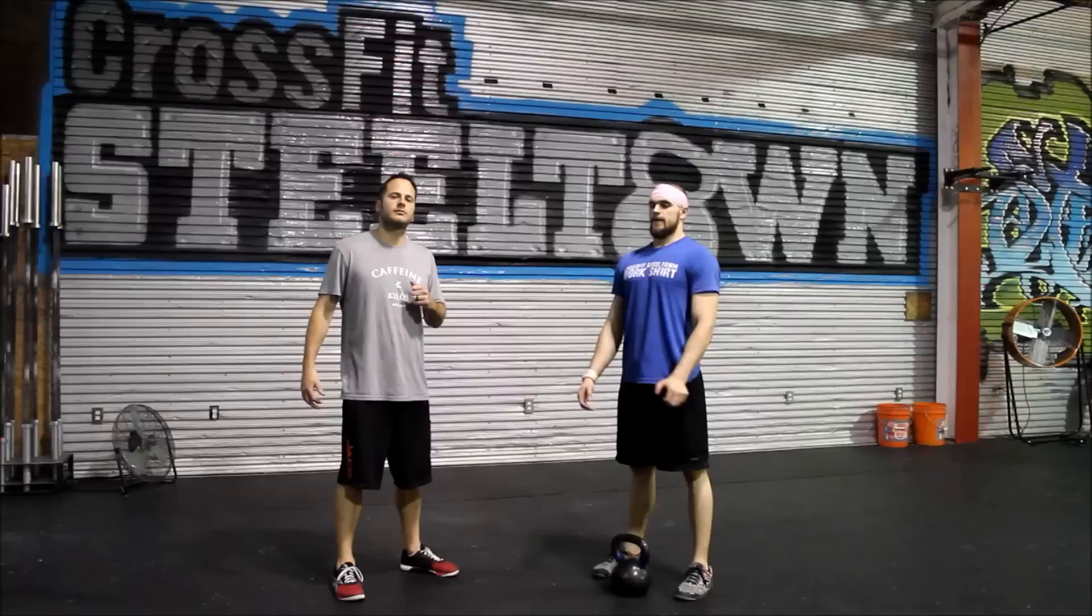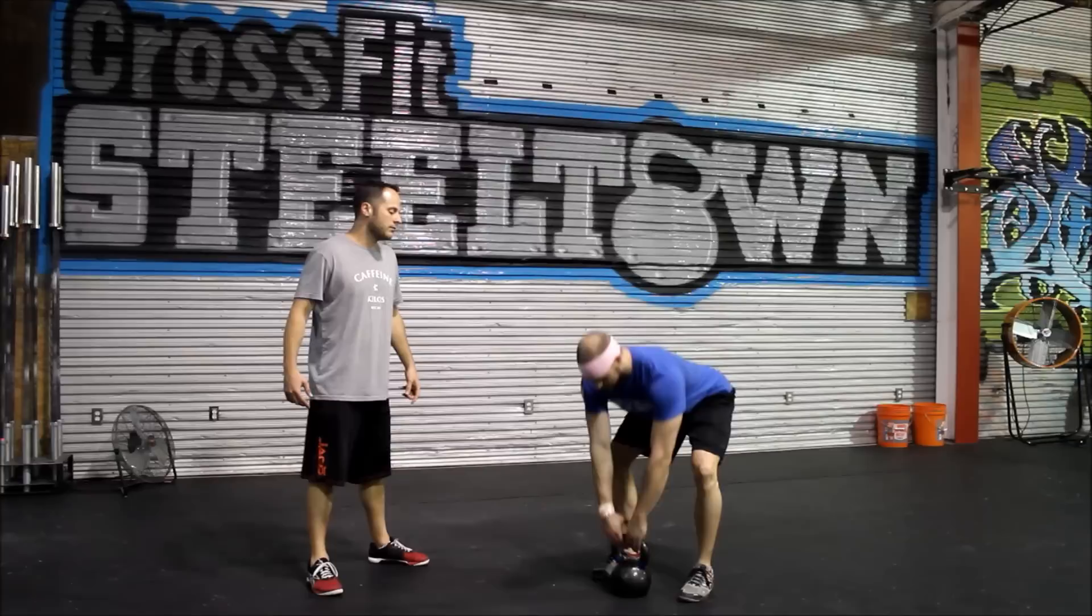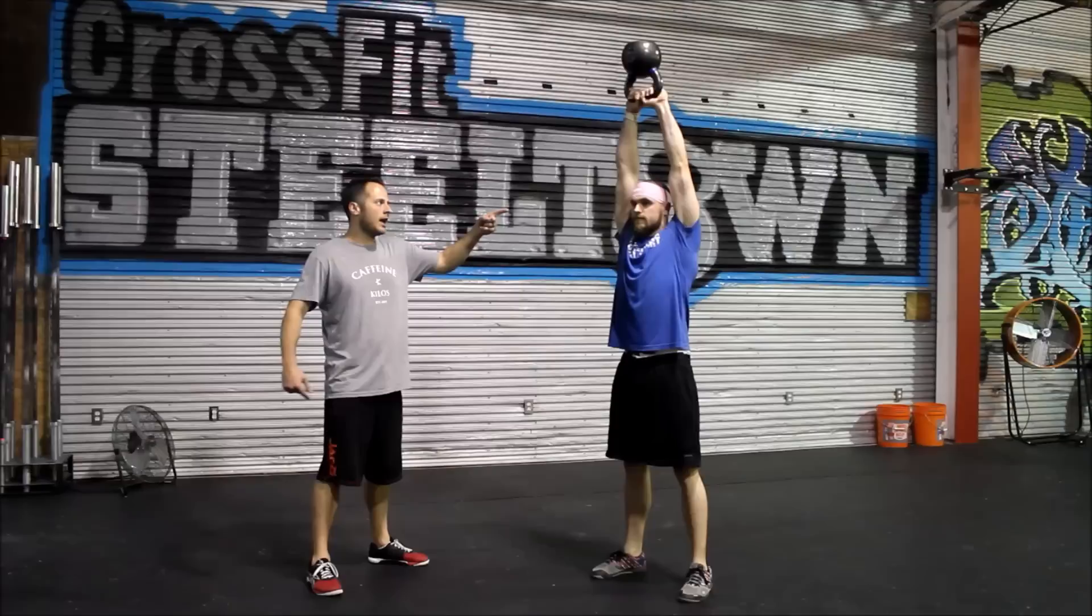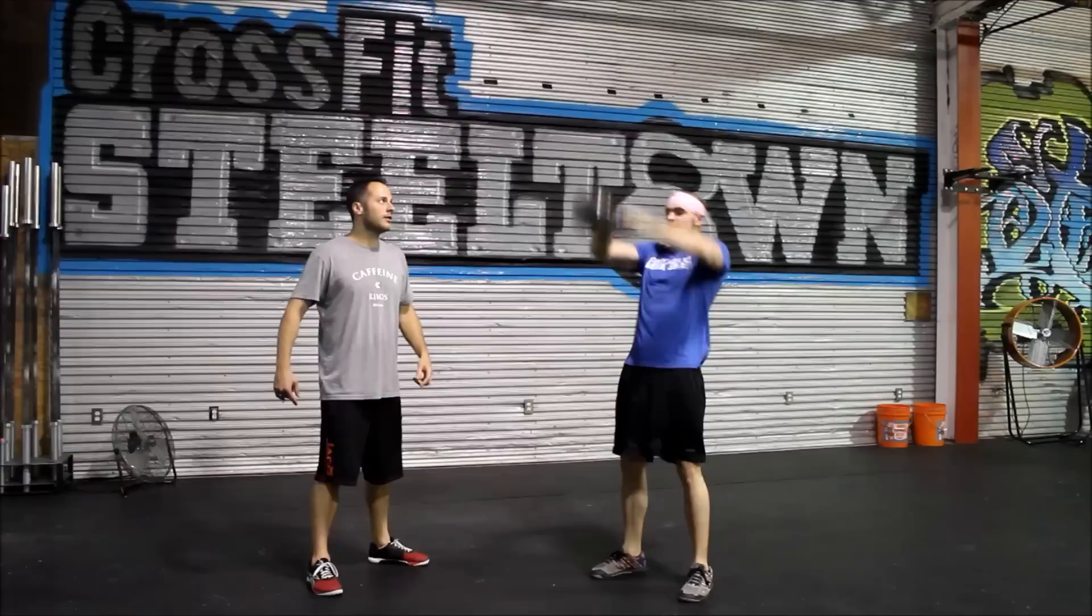Hey guys, we're talking about the kettlebell swing standards here. First thing an athlete is going to do is pick the kettlebell up, extend it up over their head, arms locked out, head through the window, hips fully extended. For the rep to count, the athlete needs to bring it back down between their legs or set it down completely on the ground.